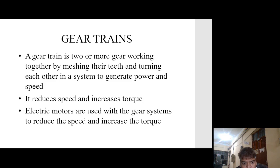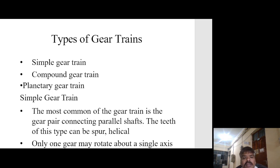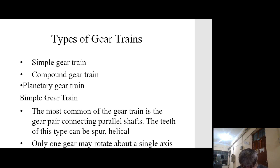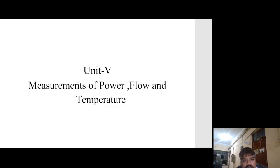A gear train is two or more gears working together by meshing their teeth to generate power and speed — it reduces speed and increases torque. Electric motors are used with gear systems to reduce speed and increase torque. Types of gear trains include: simple gear train, where only one gear rotates about a single axis and teeth can be spur or helical; compound gear train; and planetary gear train.